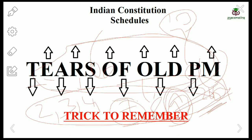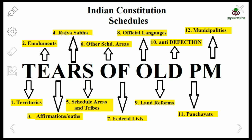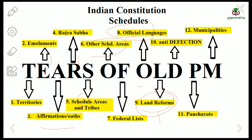Now let's see how we relate everything from the phrase 'Tears of Old PM.' T stands for Territories — First Schedule. E stands for Emoluments — Second Schedule. A stands for Affirmations and Oaths — Third Schedule. R stands for Rajya Sabha — Fourth Schedule. S stands for Scheduled Areas and Scheduled Tribes — Fifth Schedule. O stands for Other Scheduled Areas — Sixth Schedule. F stands for Federal Lists (Union, State, Concurrent) — Seventh Schedule. O stands for Official Languages — Eighth Schedule. L stands for Land Reforms — Ninth Schedule (remember the IR Coelho 2007 case and First Amendment 1951). D stands for Anti-Defection Laws — Tenth Schedule. P stands for Panchayats — Eleventh Schedule (73rd Constitutional Amendment Act, 1992). M stands for Municipalities — Twelfth Schedule (74th Constitutional Amendment Act, 1992).